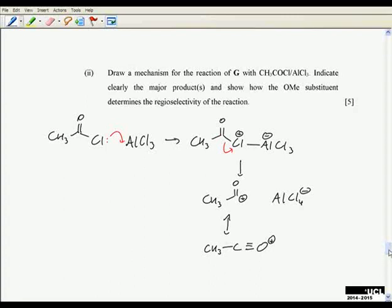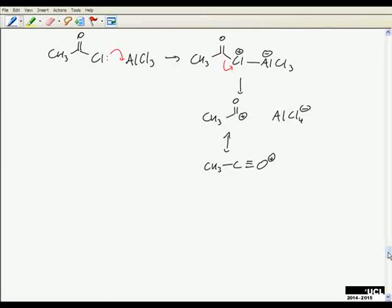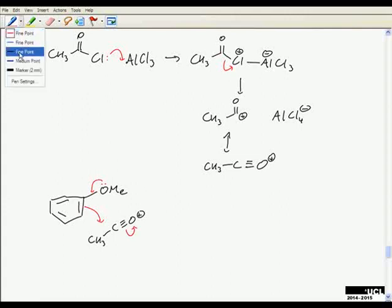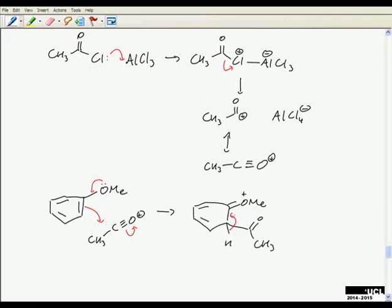What about the actual reaction with the anisole? Well, what we could draw is attack of the electrophile in the ortho, meta, and para positions and draw all the canonical forms for the intermediate. But in fact, all the key information you've got if you just focus on the main most important canonical form. So pushing from the oxygen of the methoxy group, we get that intermediate, and then we lose a proton to give the ortho-substituted product.